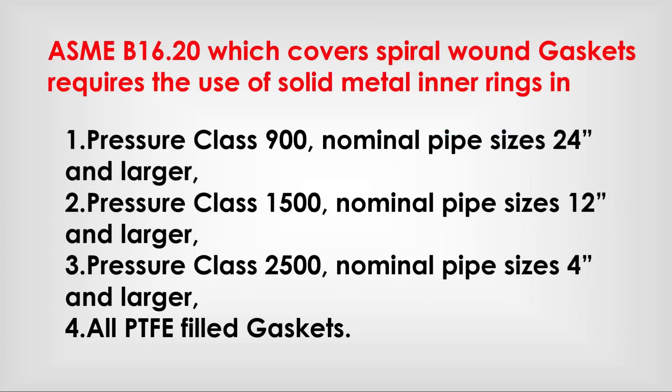ASME B16.20 covers spiral wound gaskets and requires the use of a solid metal inner ring for: pressure class 900, nominal pipe sizes 24 inch and larger; pressure class 1500, nominal pipe size 12 inch and larger; pressure class 2500, nominal pipe size 4 inch and larger; and all PTFE-filled gaskets.